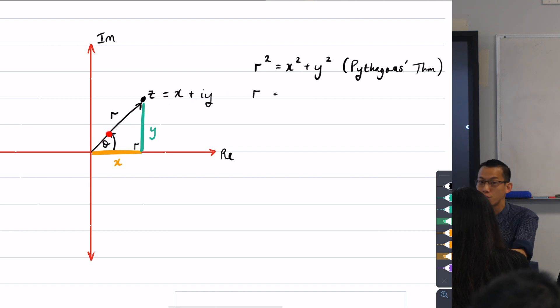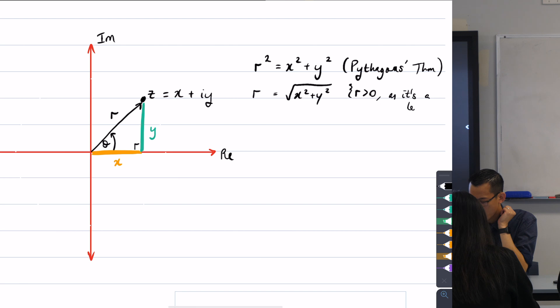So because r is a magnitude, is what we would call it, right? It's a magnitude. I can't have something negative for it. And I'm going to state that in a second. So therefore, I can just say r is the positive square root of x squared plus y squared. And we should say r is greater than zero as its length. Never take shortcuts on your reasoning. Okay, great.